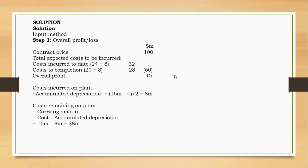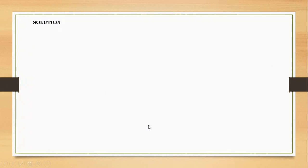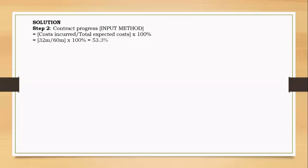Now, using the input method, to determine the progress of the contract I take the ratio of costs incurred to date over total costs — that is 32 over 60. For the previous output method, there was no need to break down the plant cost, but here it is very important. Step 2: contract progress using the ratio of costs — costs incurred to date over total cost expected, 32 over 60. Multiply by 100 and you get 53.3 percent.